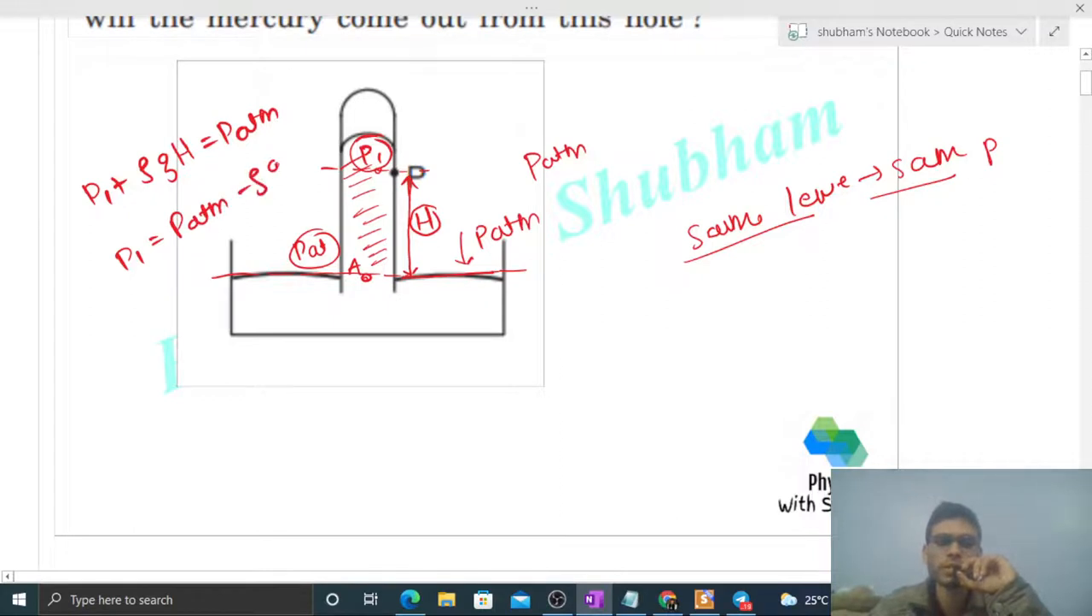It means P1 is lesser than atmospheric pressure. Now inside the tube, the pressure P1 is lesser than atmospheric pressure, which is lesser than atmospheric pressure. Liquid moves from high pressure to low pressure.